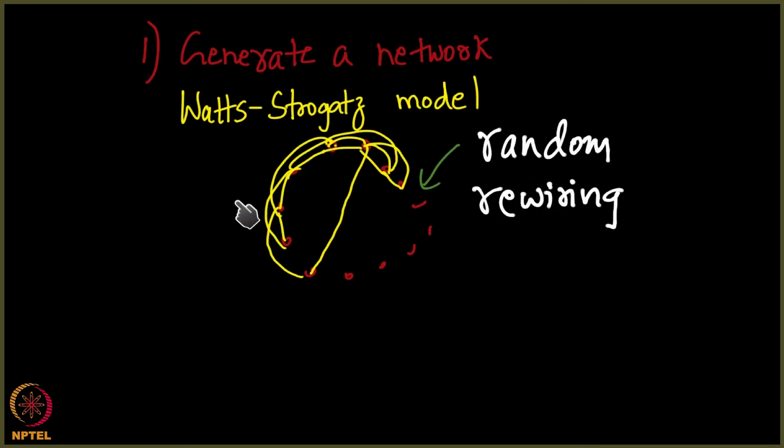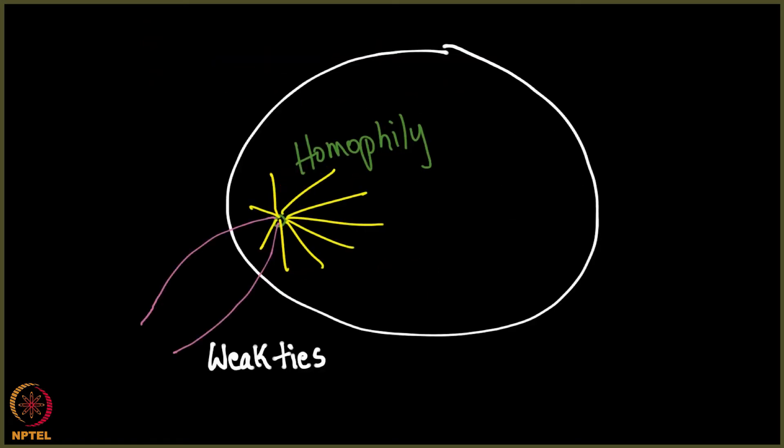The point here is this is how the real world network functions. So you might ask me who does random rewiring? Nobody does random rewiring. This is how, you know, things are. I told you the fact that you have a couple of people outside your geographical location while most of your friends are within your geographical location. You might have a couple of friends outside your country, outside your continent, and that is the equivalent of the random rewiring here.